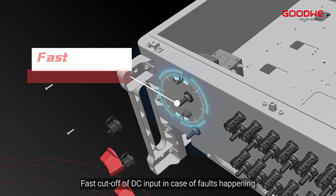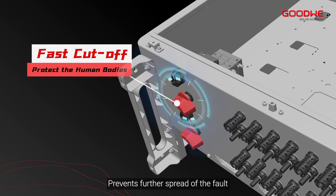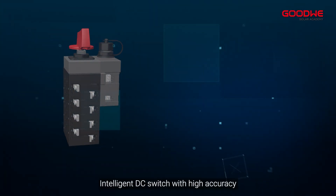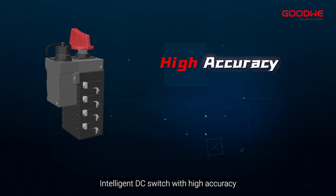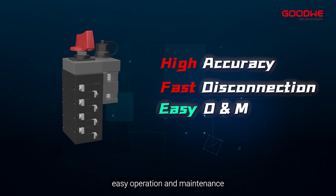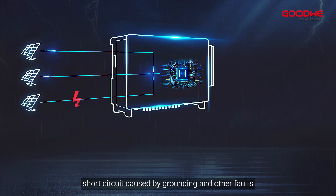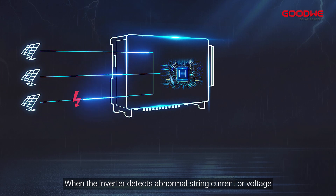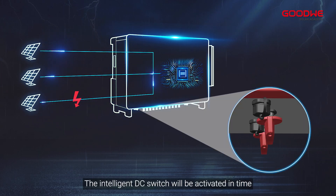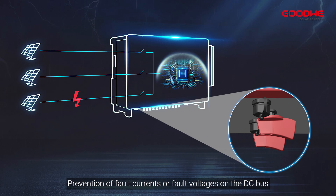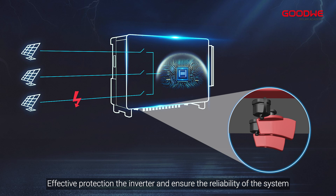The intelligent DC switch enables fast cut-off of DC input in case of faults, preventing further spread of the fault and resulting inverter failure or even personal injury. With high accuracy and fast disconnection, when the DC side experiences current backflow, short circuit caused by grounding, or other faults, the inverter detects abnormal string current or voltage and the intelligent DC switch is activated in time for precise cut-off of the DC side.